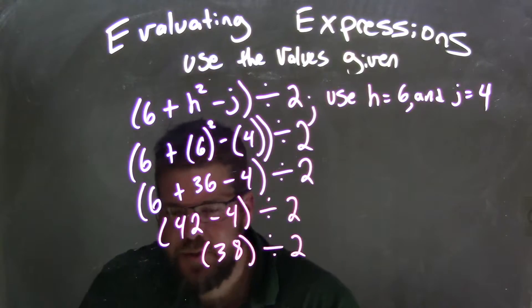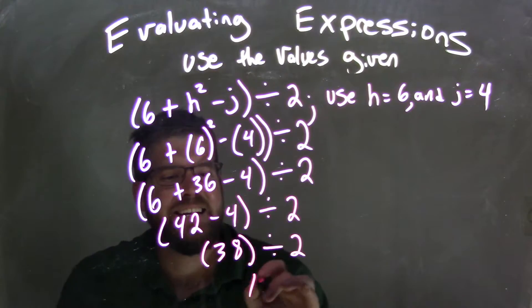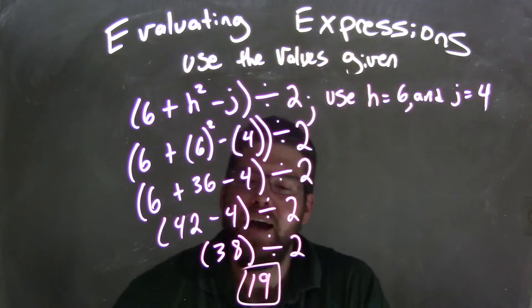And lastly, 38 divided by 2. What is that there? Well, that is 19, and there's our final answer.